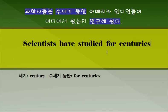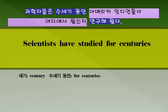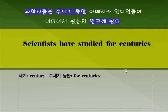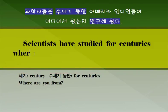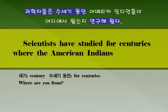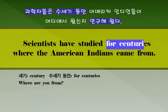'Scientists have studied for centuries' 다음에 무엇을 연구했습니까? 아메리카 인디언들이 어디에서 왔는지—너 어디서 왔니? 너 어디 출신이니? 이때 쓰는 표현은 'where from'이죠. 바로 이 표현을 이용하면 됩니다. 'Where are the American Indians?' 시제가 과거여야 하니까 'came'을 쓰고 'from'을 쓰면 문장이 자연스럽게 연결됩니다. 'For centuries'라는 표현을 다시 한번 확인합니다.